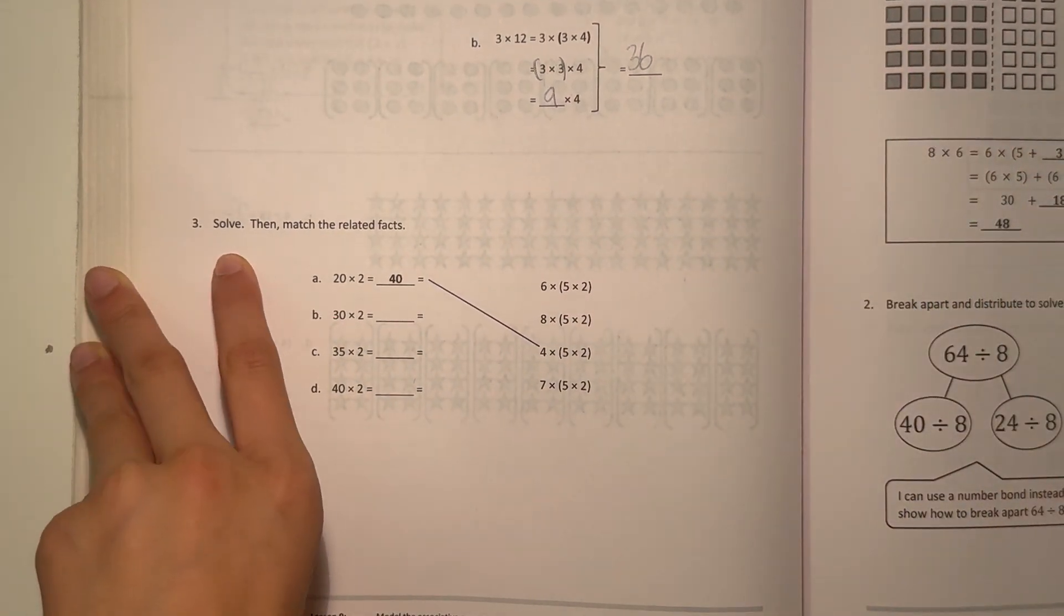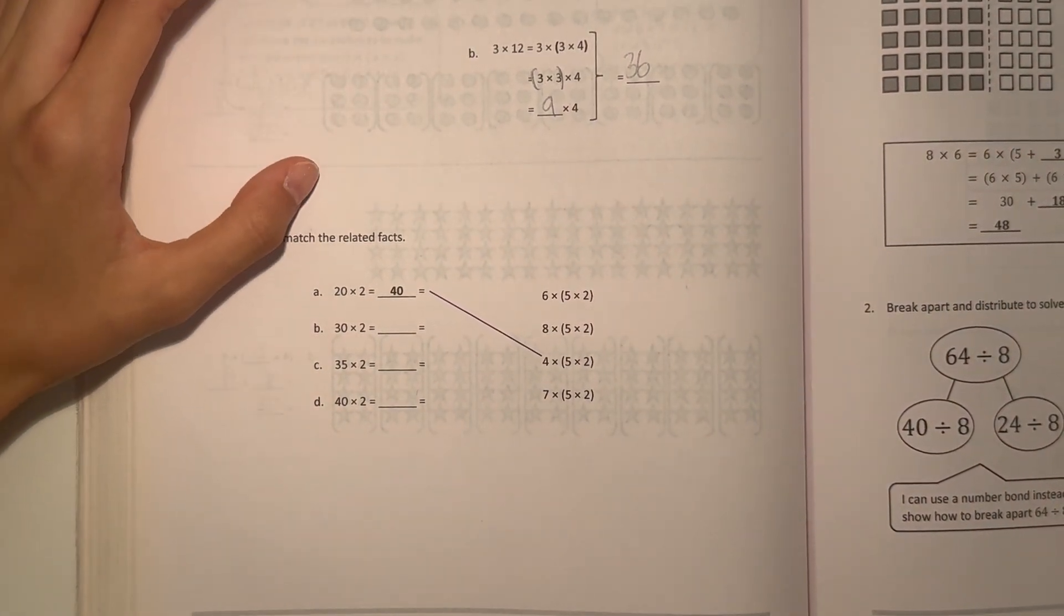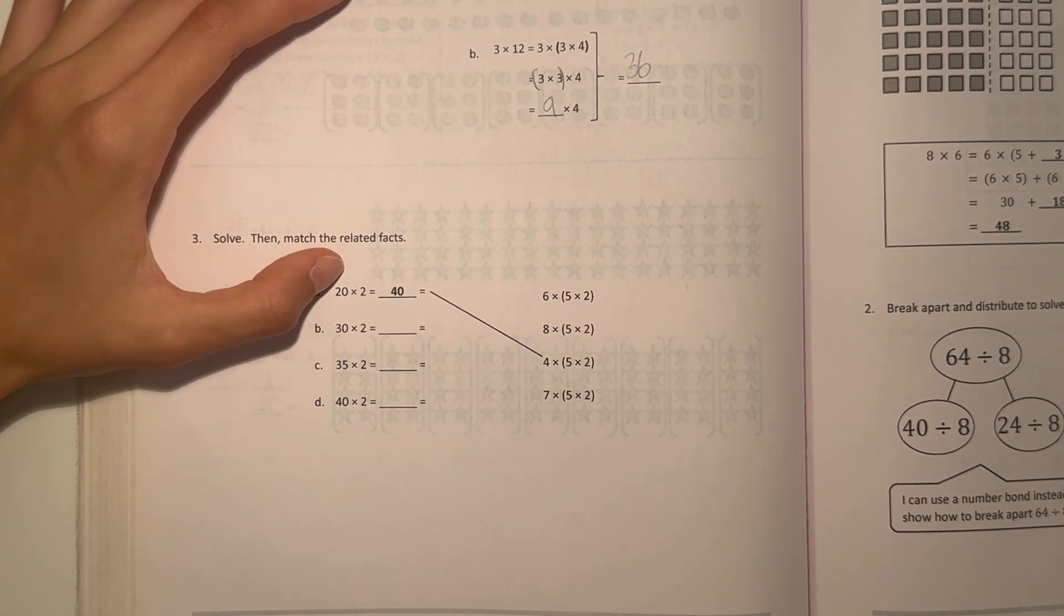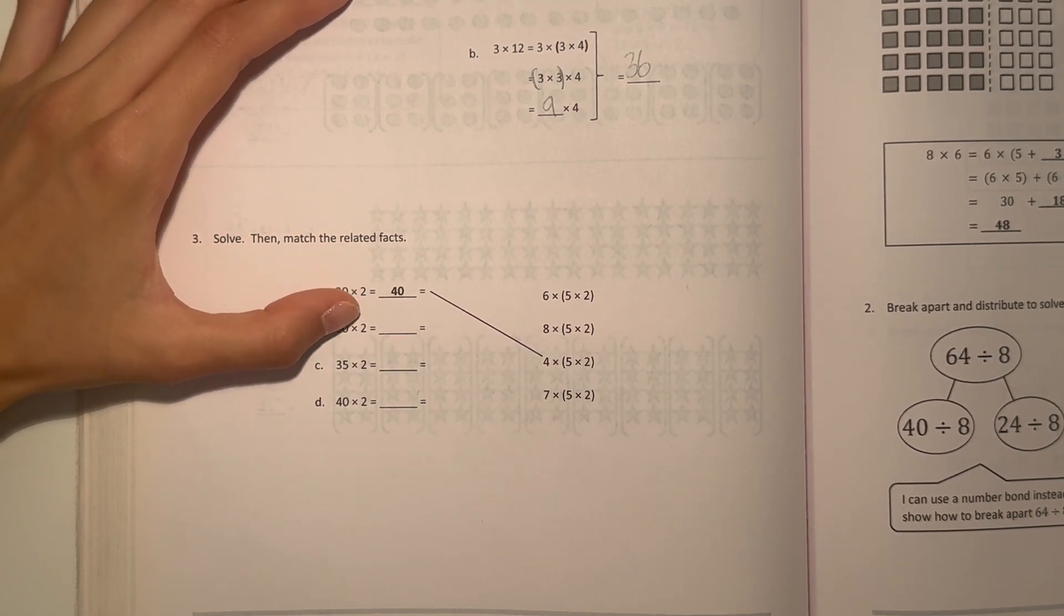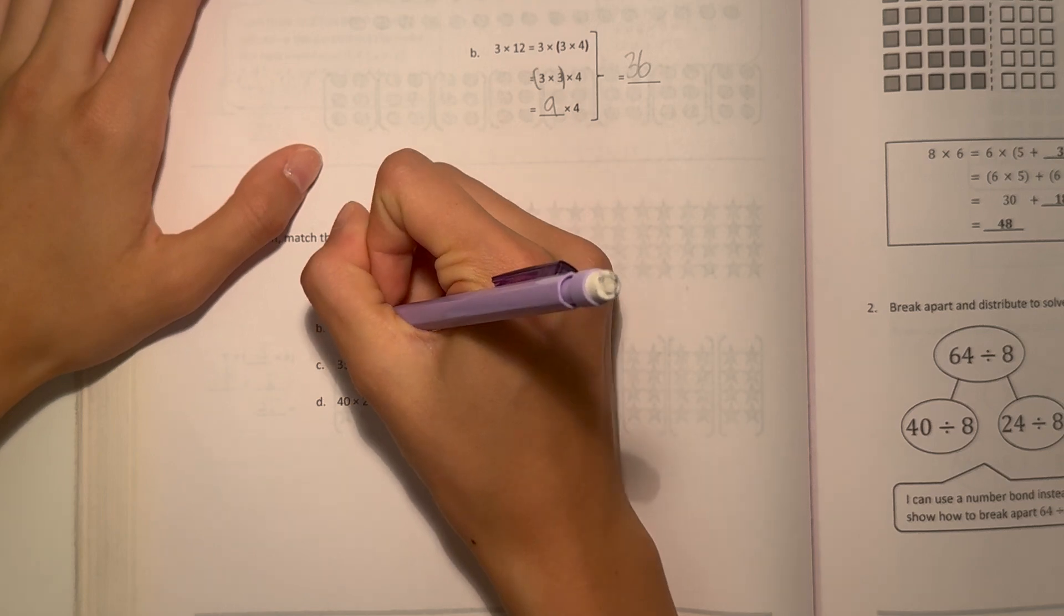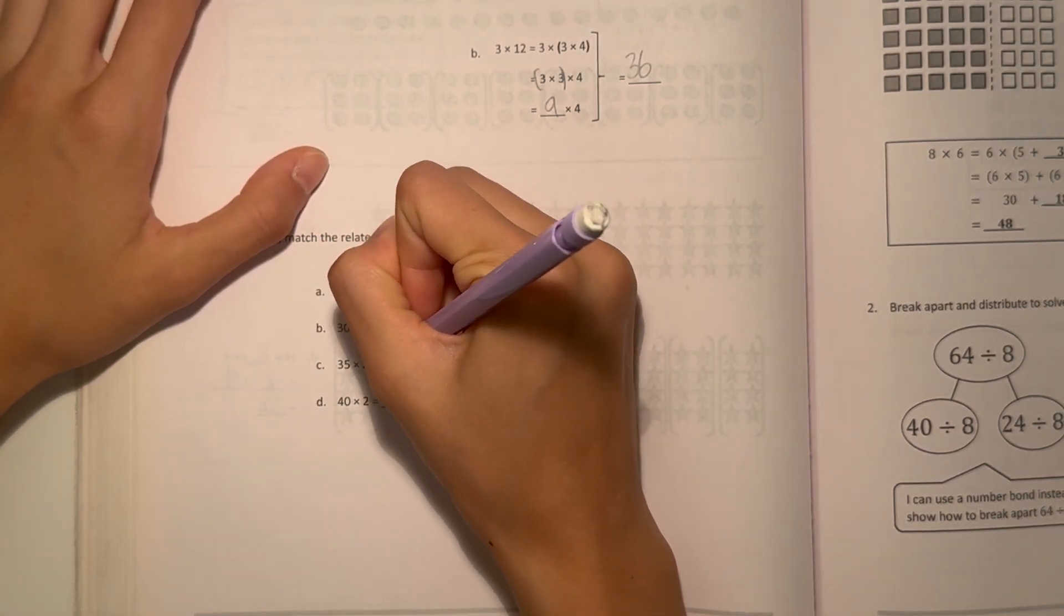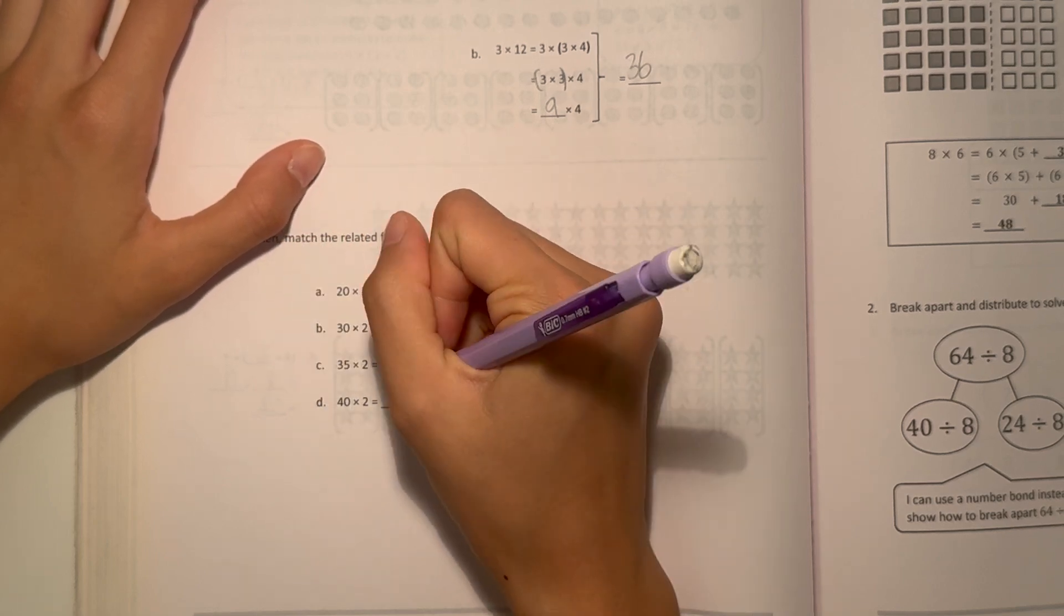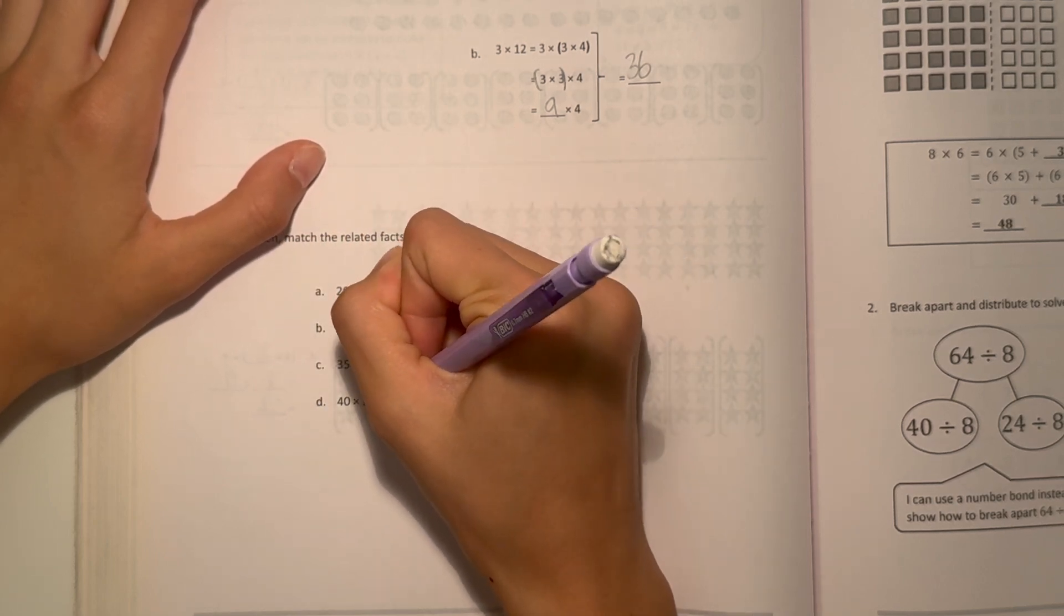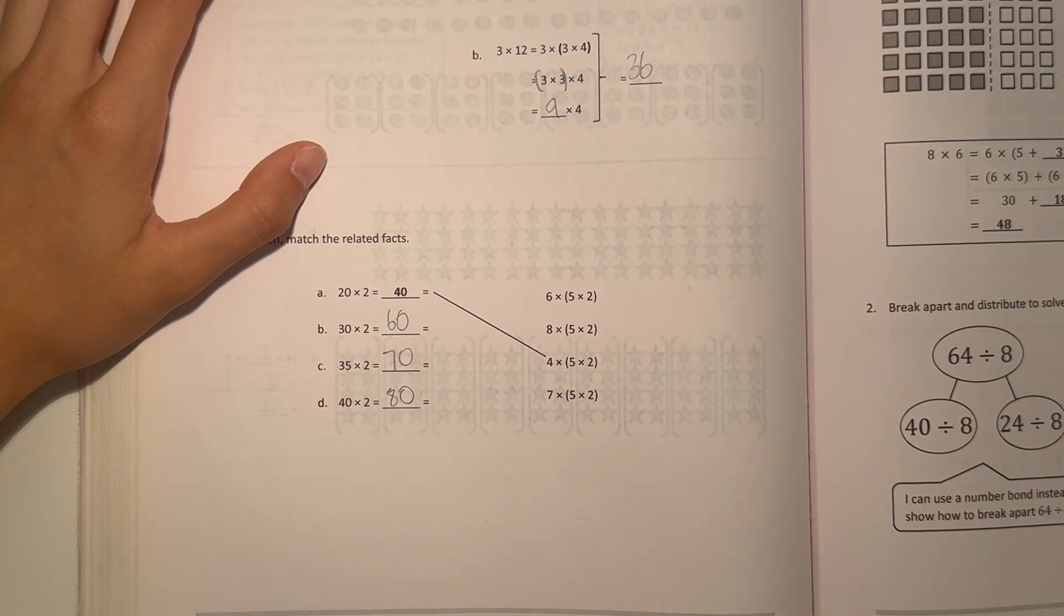Alright, and number 3. We solve, then match the related facts. A, we have 40, because 20 times 2 is 40. And now 30 times 2 is 60. 35 times 2 would be 70. And 40 times 2 would be 80. So now we can match them up.